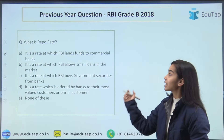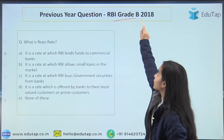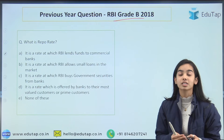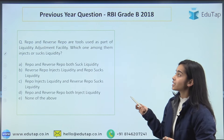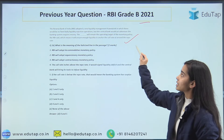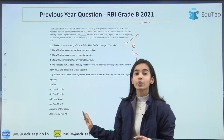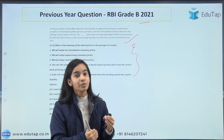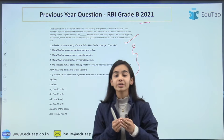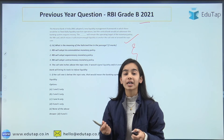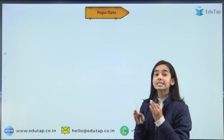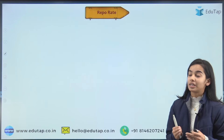This topic is very important because in the previous year paper of RBI Grade B in 2018, three or more questions were asked about the repo rate. As you can see, these three questions were asked. A question was asked which we will discuss after covering monetary policy and its types. In 2021 also, a question related to the repo rate was asked where you needed basic knowledge of the repo rate to answer it.